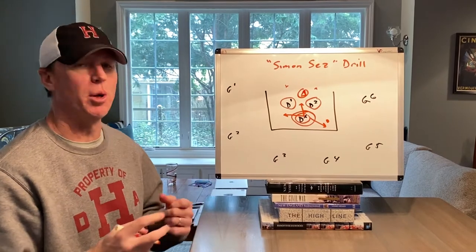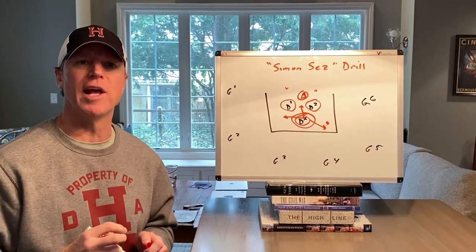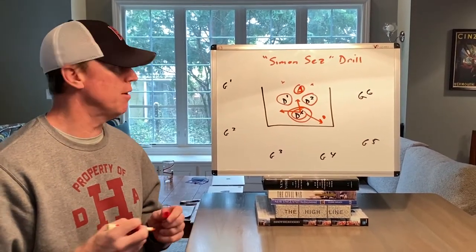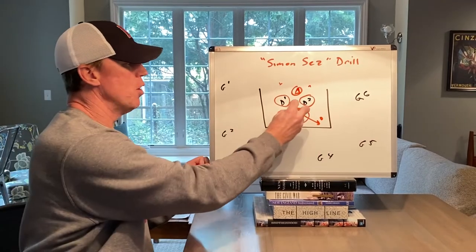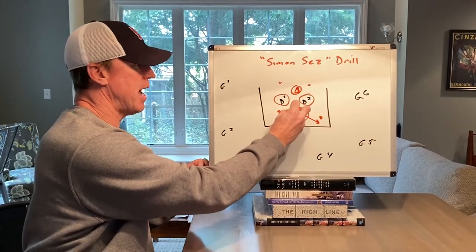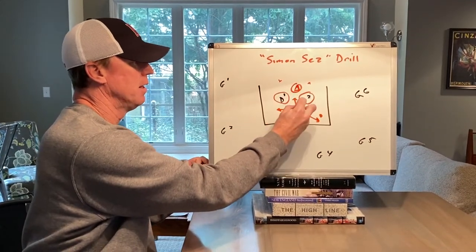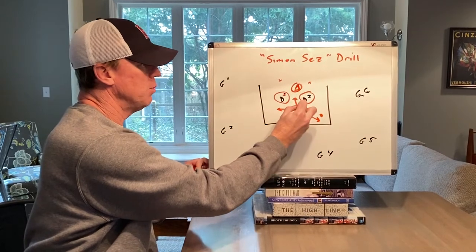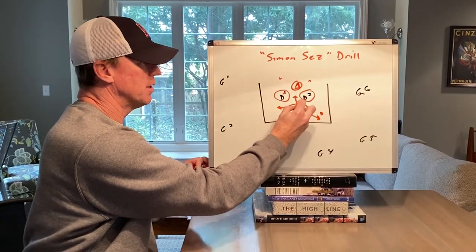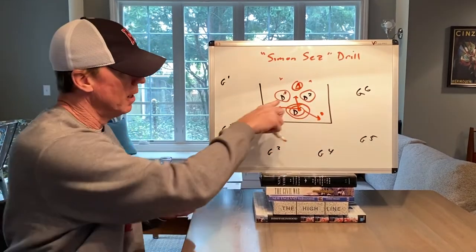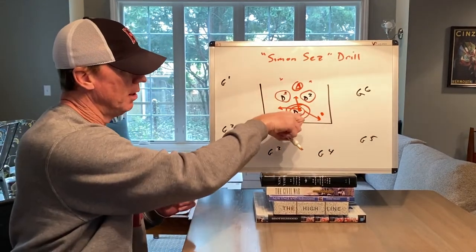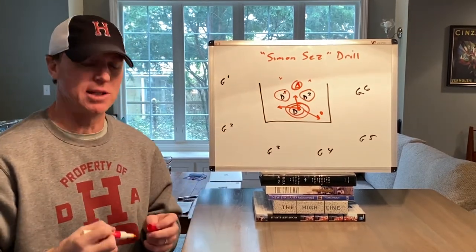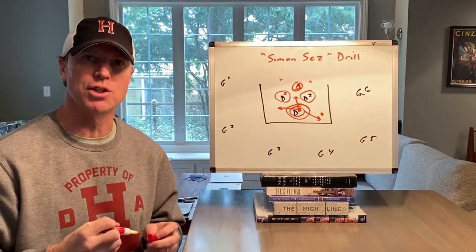He might give DX three instructions, and then you rotate — DX would leave, maybe he moves here, and D1 becomes that guy. The original Simon Says guy moves off and is now the one giving instructions to his teammates.